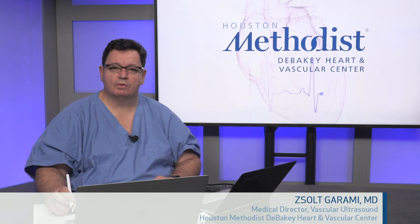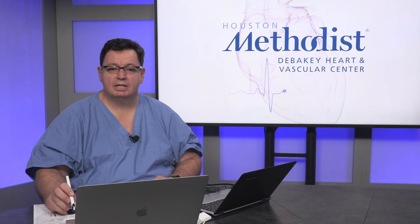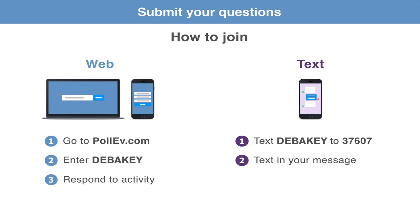My name is Joel Gurami. If you would like to have any questions, text to us — please text DEBEKEY to the number 37607, or by the web you can go to POLLEV.com and enter DEBEKEY. Any questions are welcomed, and we would also like to see suggestions and anything you would like to hear in the future.